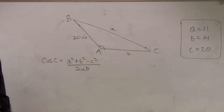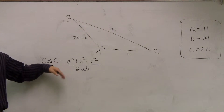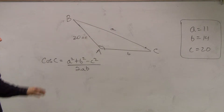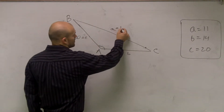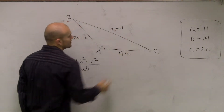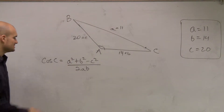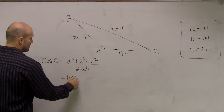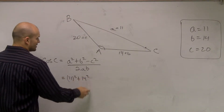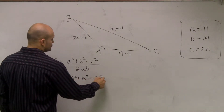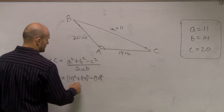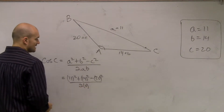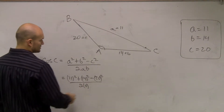Now we simply need to plug in what we know. A is 11 and B equals 14. So we'll have 11 squared plus 14 squared minus 20 squared, divided by 2 times 11 times 14.